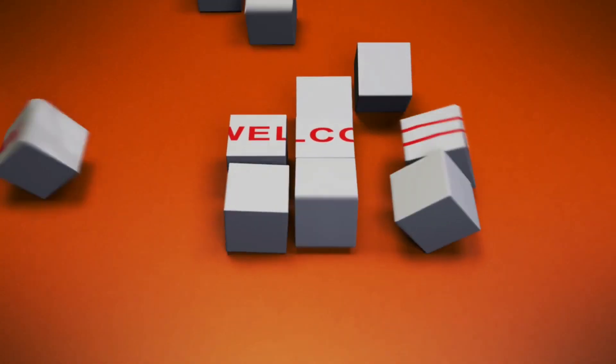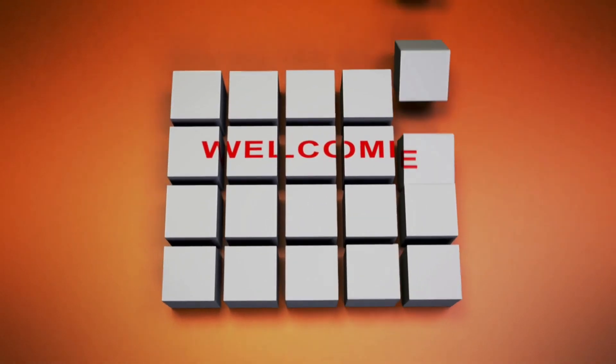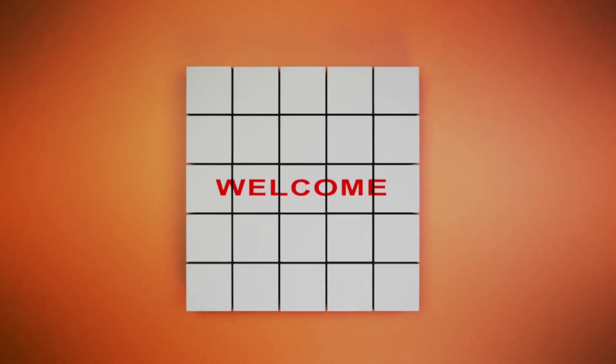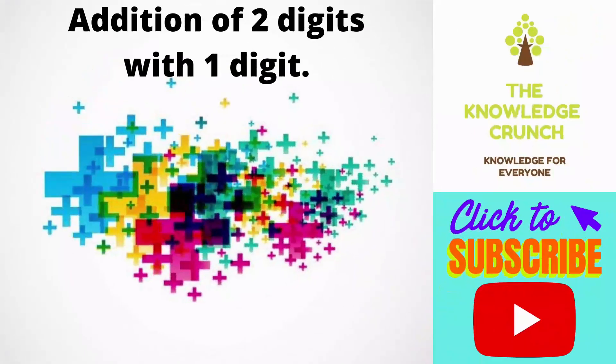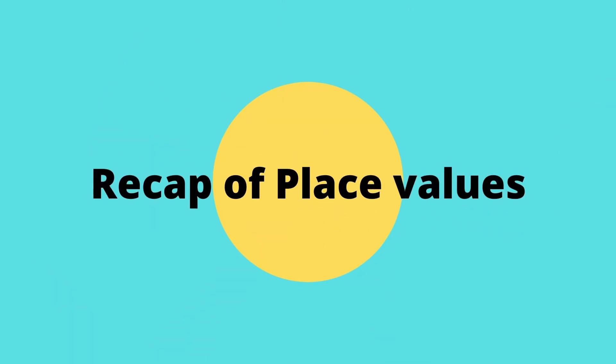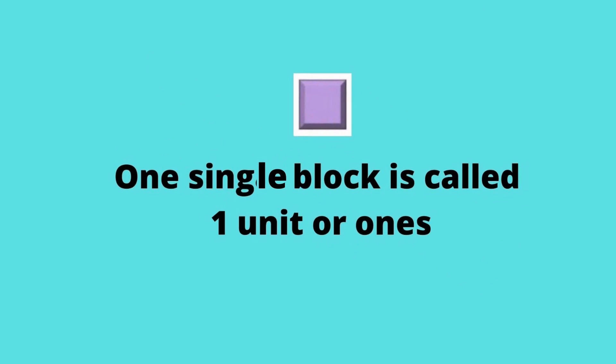Assalamu alaikum friends, welcome to my channel, The Knowledge Crunch. Today the topic is addition of two digits with one digit. Now let's have a recap of place values. We know that one single block is called one unit or ones.